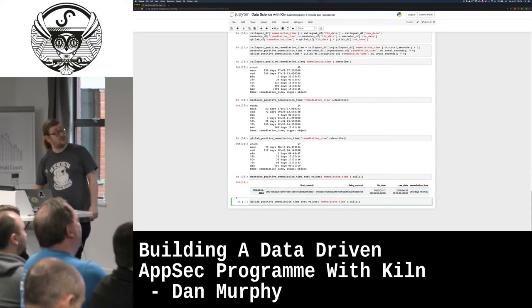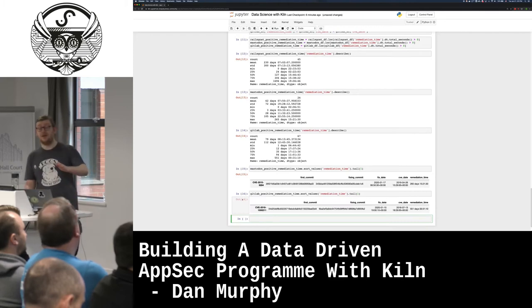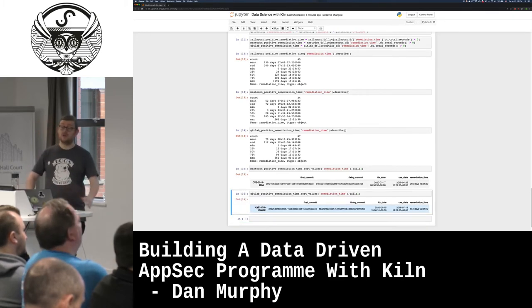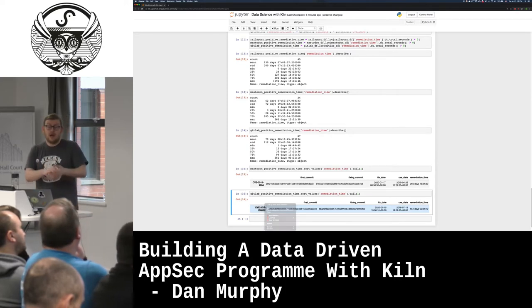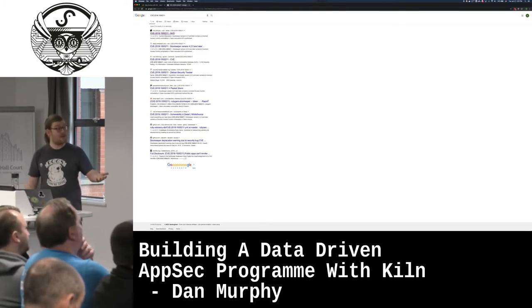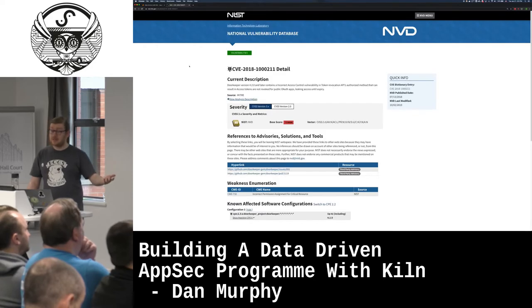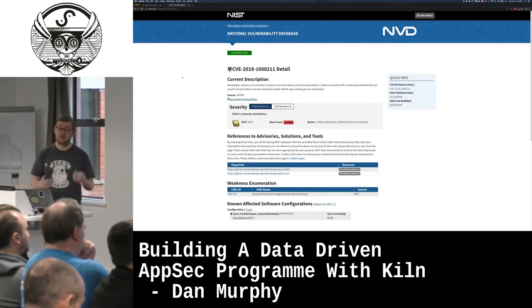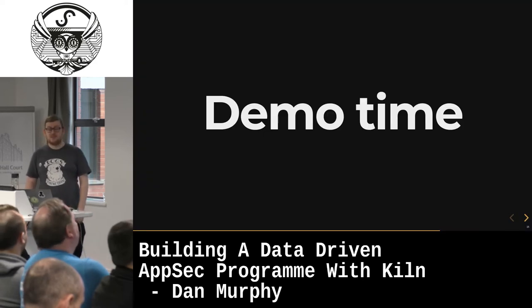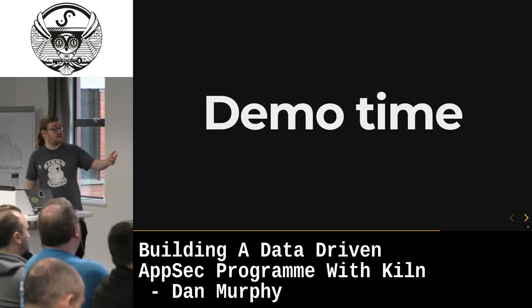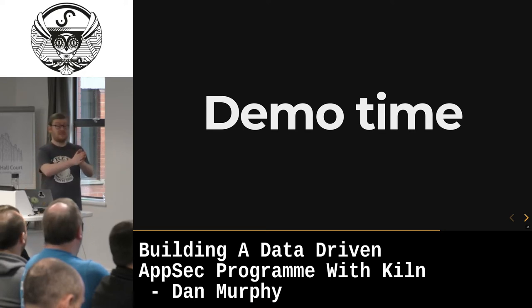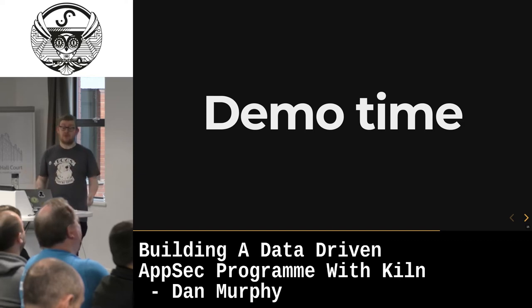Mastodon's longest remediation was 265 days. There might be a legitimate reason — they might have triaged the issue, realized they're not using the vulnerable part of the affected package, and decided they've got bigger fish to fry. Or it might be that they didn't know about it, or upgrading dependencies has been flaky because they don't have good test coverage and upgrading breaks things. Or it might be that that part of the codebase didn't have an owner anymore — if it's a big monolith and no one team is responsible, everyone will just assume someone else will fix it.